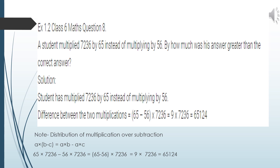We use the distributive property of multiplication over subtraction: a × b − a × c = a × (b − c). In this question: 65 × 7236 − 56 × 7236. Here 7236 is common to both terms, so we take it common: 7236 × (65 − 56) = 7236 × 9 = 65,124. So the wrong answer was greater by 65,124.